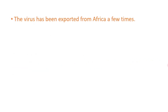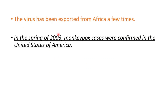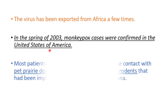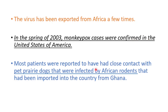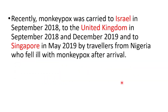The virus has been exported from Africa a few times. In the spring of 2003, monkeypox cases were confirmed in the USA. Most patients were reported to have had close contact with pet prairie dogs that were infected by African rodents imported from Ghana. More recently, monkeypox was also carried to Israel, the UK, and Singapore.